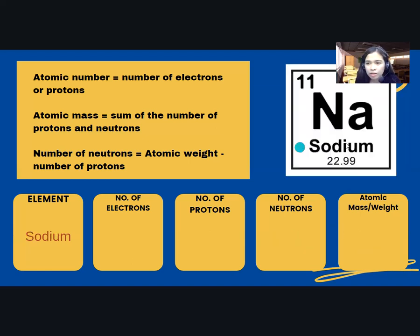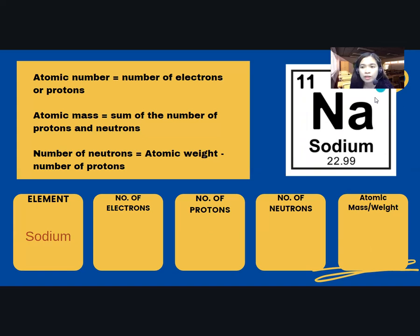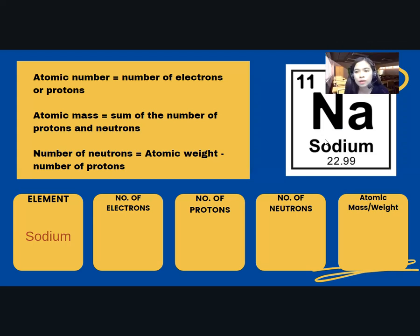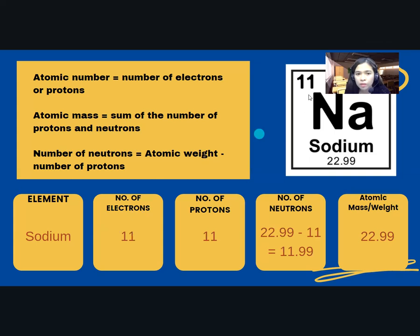So your turn — try to answer this and write your answers in the comment box below. I'll check it later. You can pause this video to answer. So let's answer this example using the sodium element. The number of electrons is 11 because the atomic number of sodium is 11. The number of protons is 11 also because it is the atomic number. For the number of neutrons, we subtract the number of protons from the atomic mass, which is 22.99. The answer is 11.99.